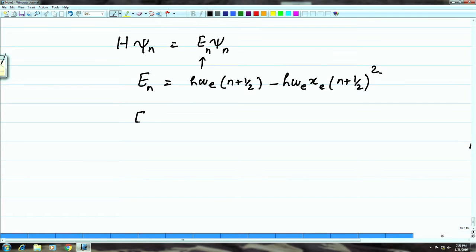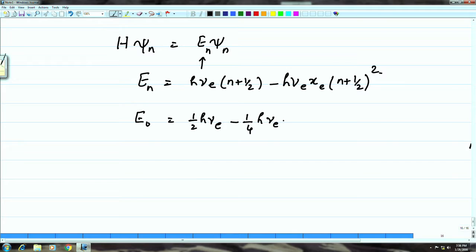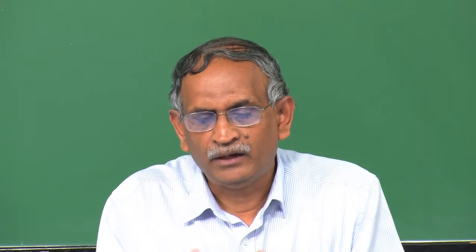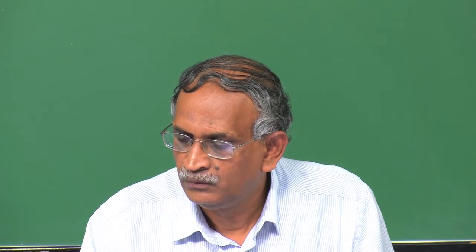For n = 0: E_0 = ½hν_e − ¼hν_e x_e. For n = 1: E_1 = (3/2)hν_e − (9/4)hν_e x_e. The anharmonic constant x_e is very small, so the energy is not exactly ½hν_e but slightly lower, since x_e is positive. Therefore the energy levels are each slightly lower than the corresponding harmonic oscillator values.